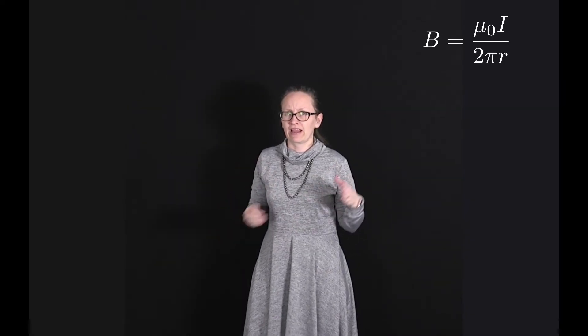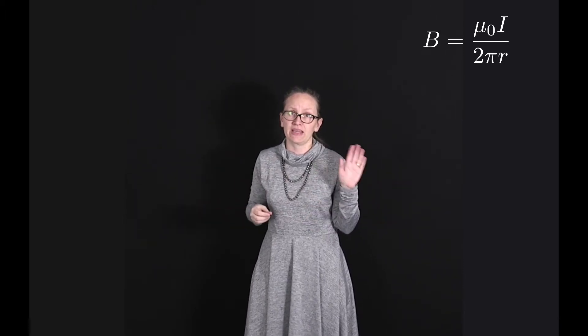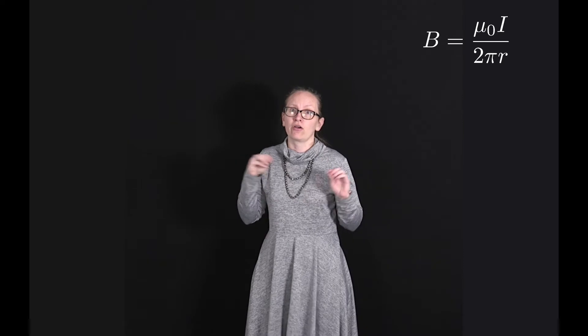So we've shown with the Biot-Savart law that the magnetic field around a very long current carrying wire is described by the equation B equals μ₀I over 2πr.